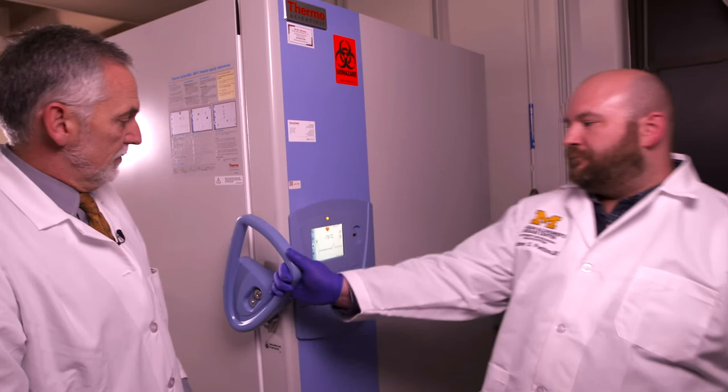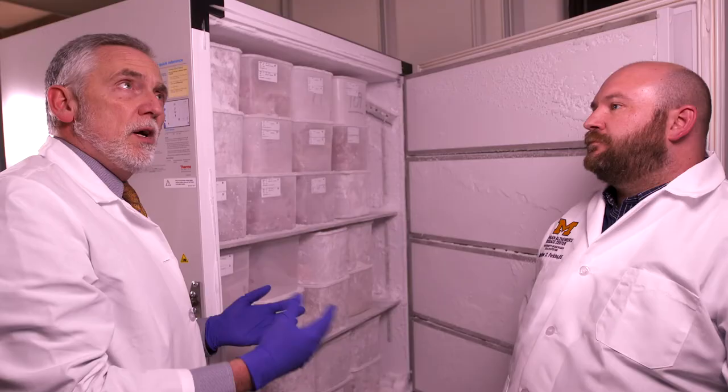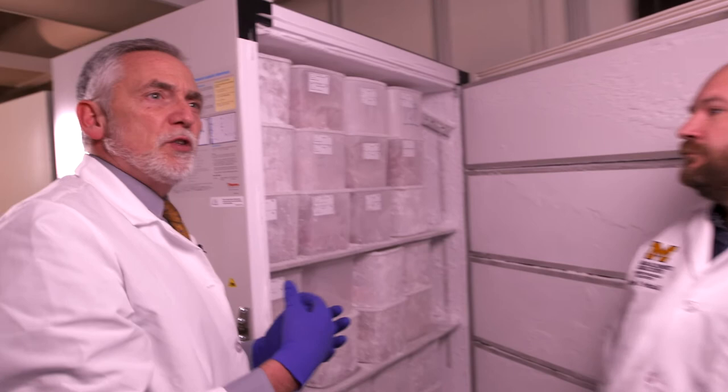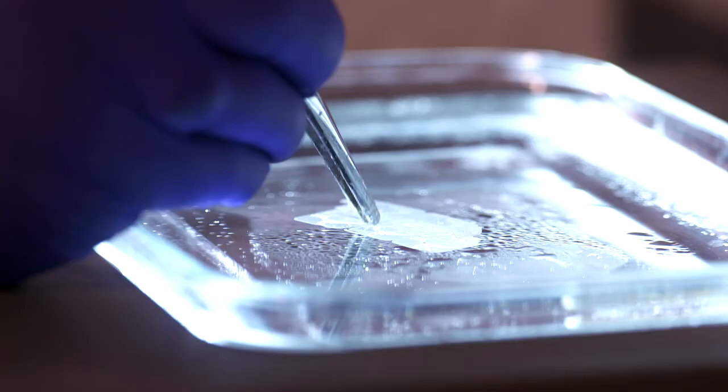And what you're seeing behind me here is the Michigan Alzheimer's Disease Center brain bank. What you see here is a freezer. It's not your typical freezer. It's a lot colder than that. We have frozen brain tissue in here and these brains will include Alzheimer's brains, dementia with Lewy body brains. Of our roughly 900 brains, almost three-quarters are dementia brains and that's very important for us.